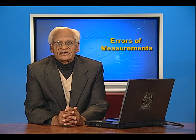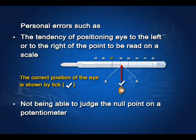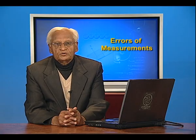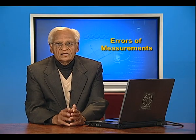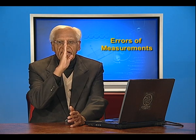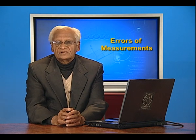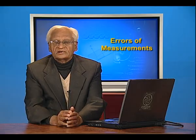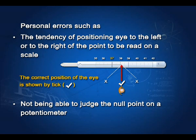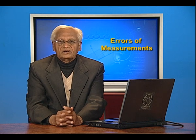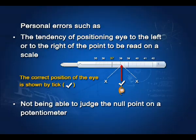A third category of systematic errors are personal errors, such as the tendency of positioning the eye to the left or to the right of the point to be read on a scale. Your eye must be in line with — or directly above — that point. If you are to the left or right, you will not measure correctly. In electrical experiments such as with the potentiometer, you may not be able to judge the null point properly, which can also cause personal error.